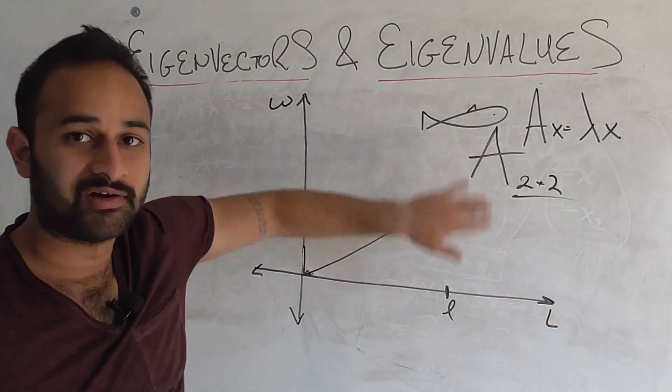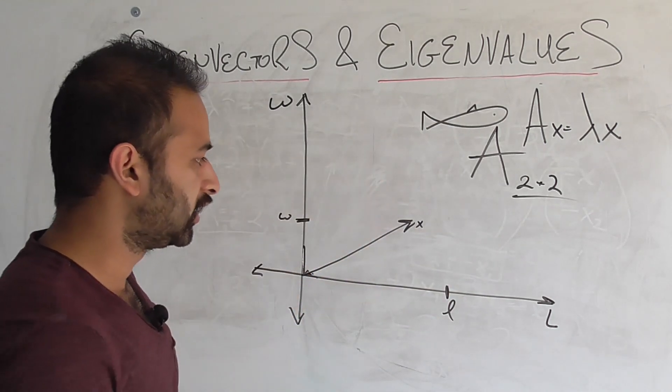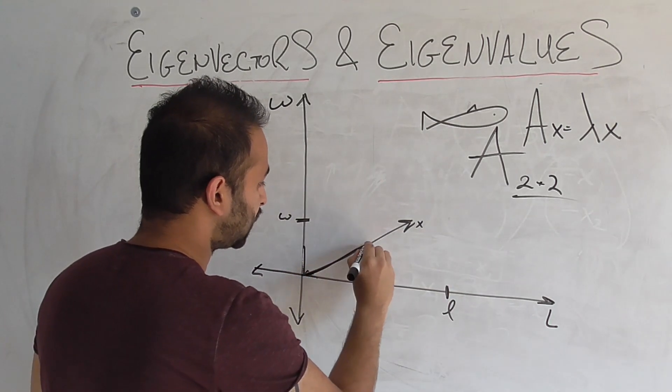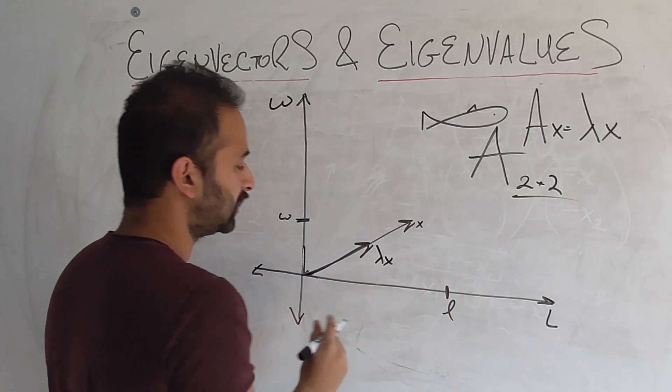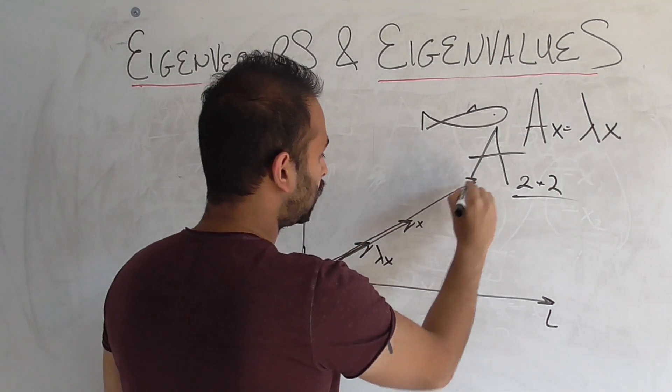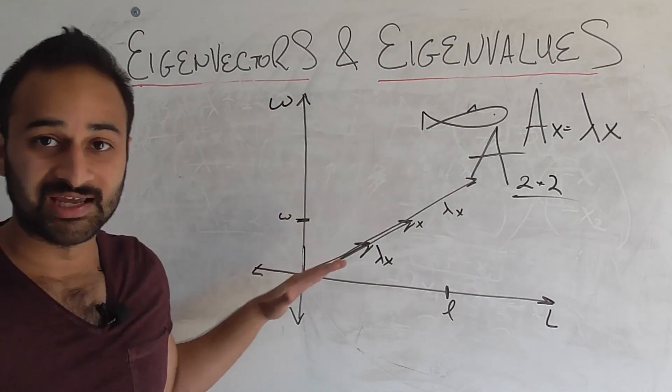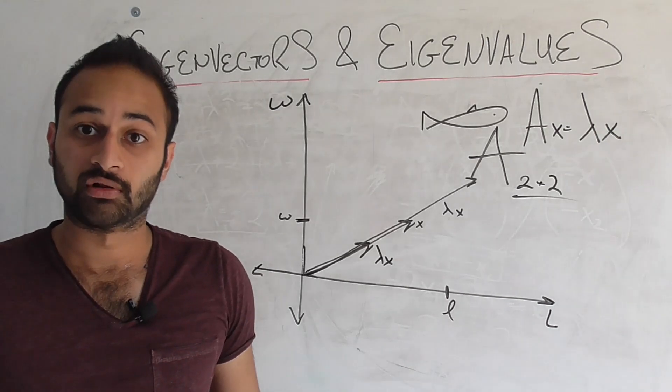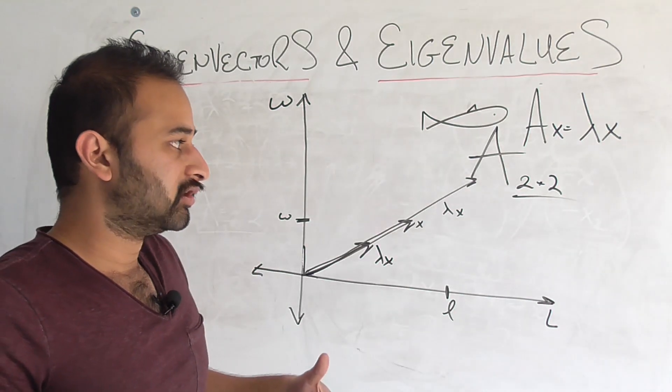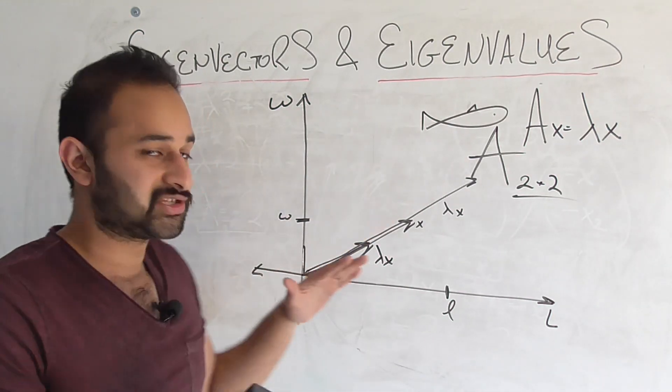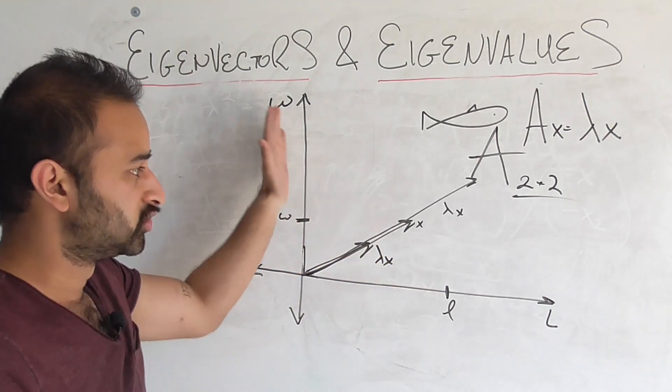That means if we have that eigenvector x, and we apply this best friend transformation right here, we're going to get back some scalar multiple, lambda x. It could be shorter, it could be longer. But the point is, it's a scalar multiple, so it goes in the same direction as the original fish. Which is a big deal, because the same direction means that it has the same ratio of length to weight, for example.